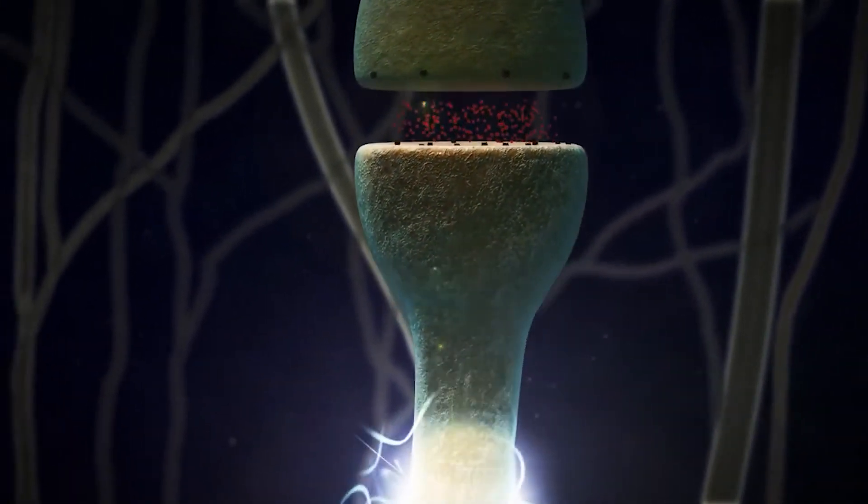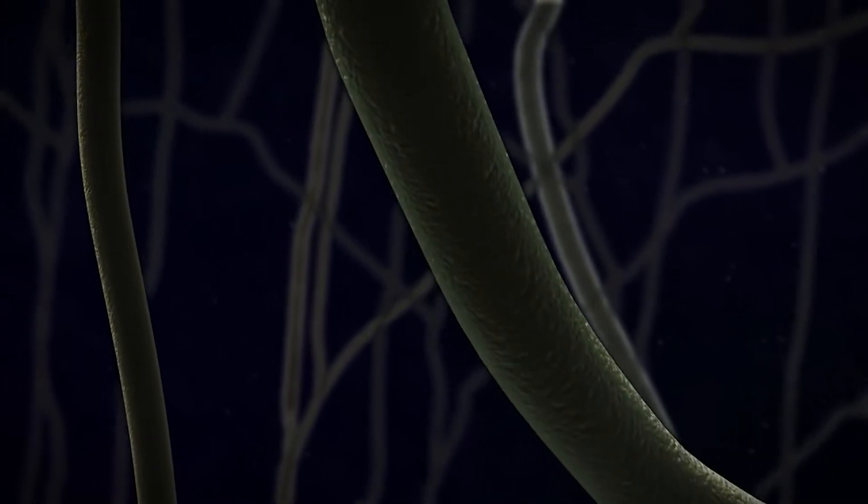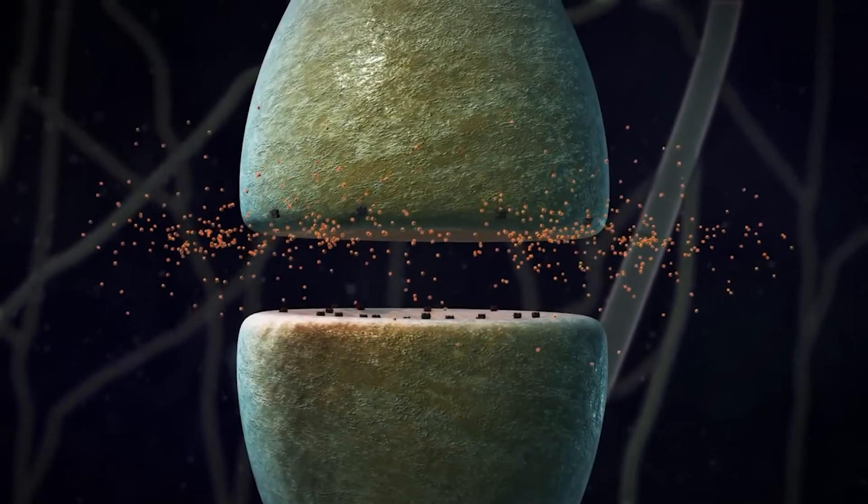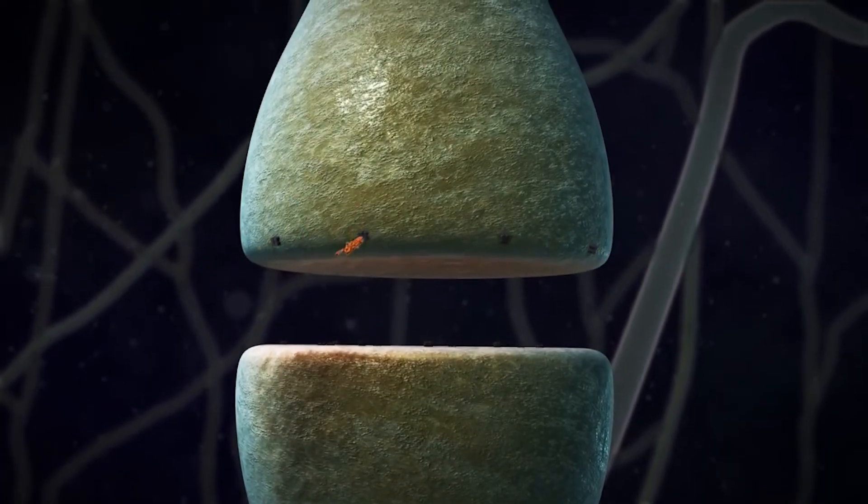Interestingly, sometimes the receptors cause an action potential to stop happening, because that's the message that needed to be passed on. And then these neurotransmitters usually get recycled back into the presynaptic cell to get used again another time.